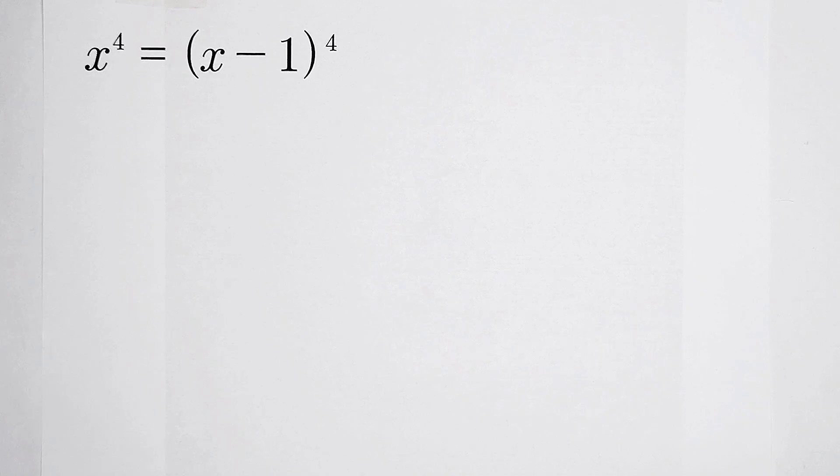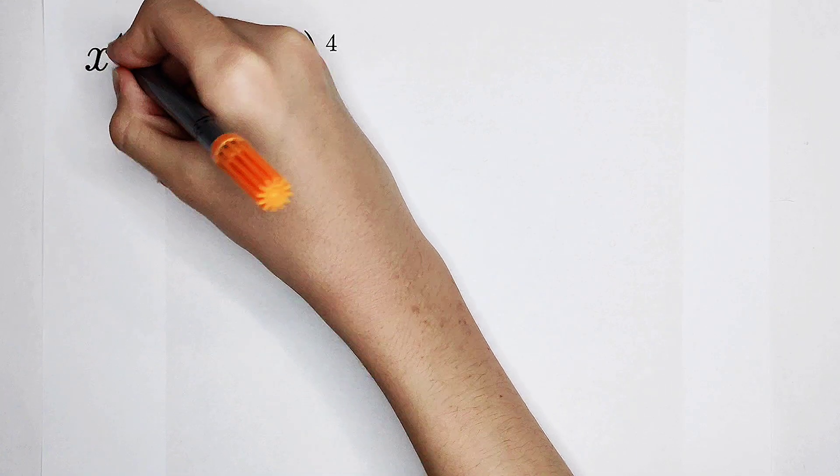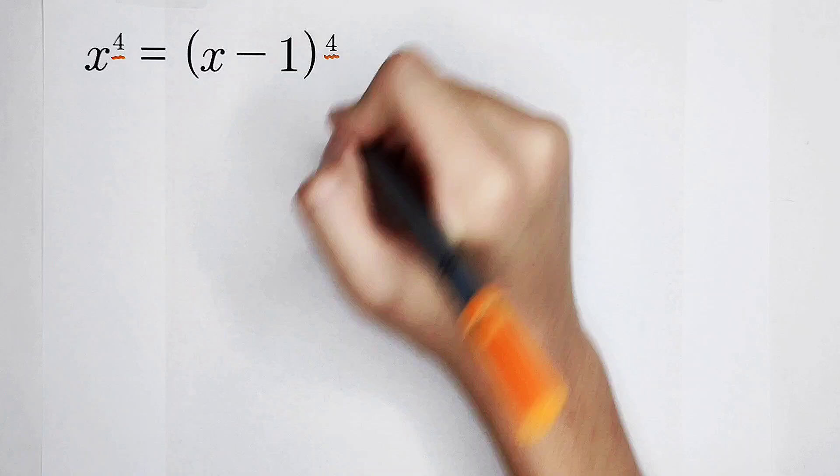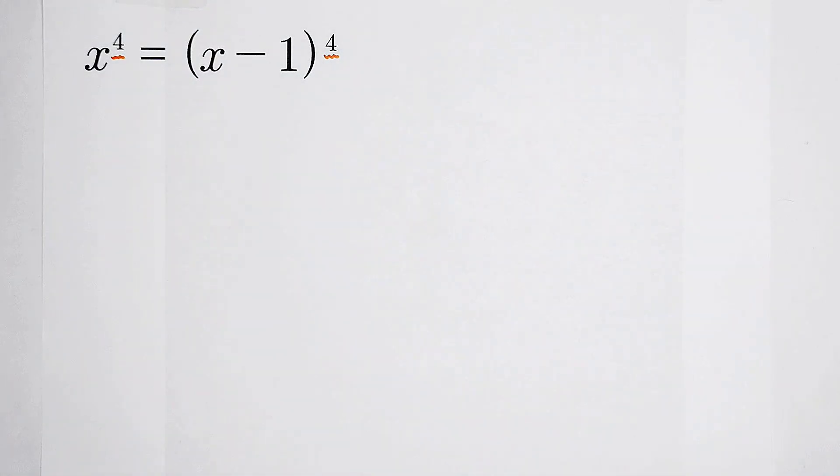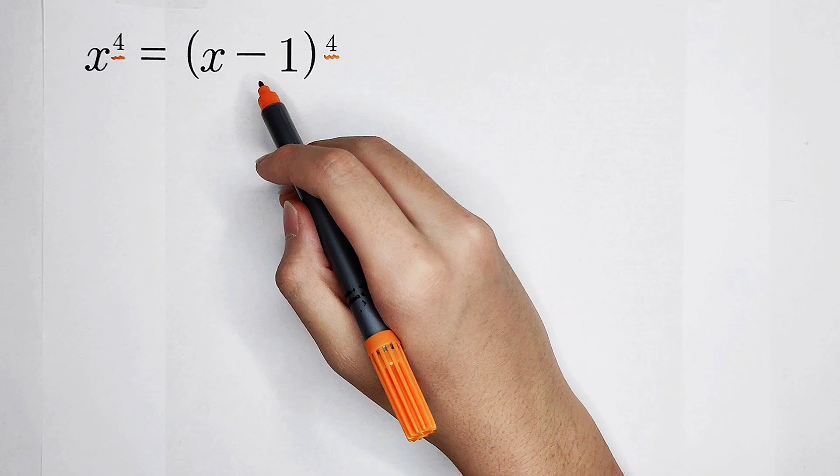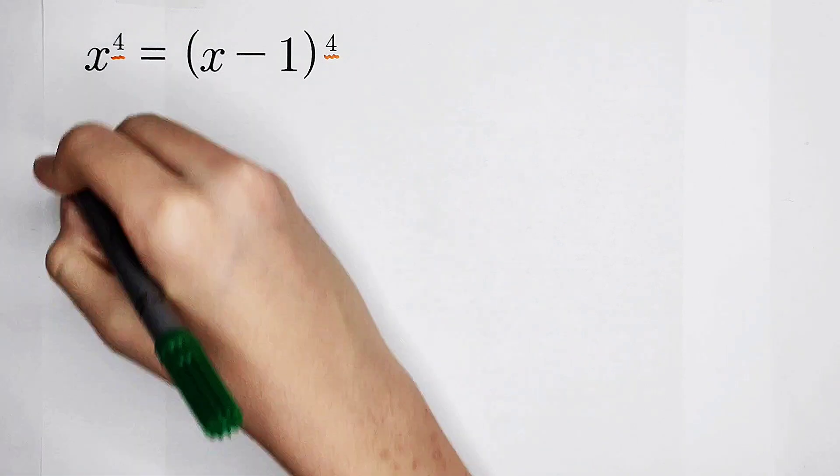For this question, we see that the exponents are not small. Our first step is to subtract x minus 1 to the power of 4 on both sides.